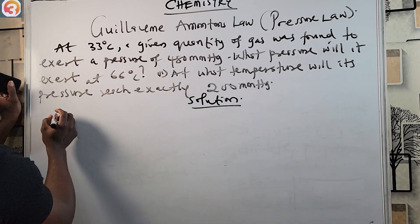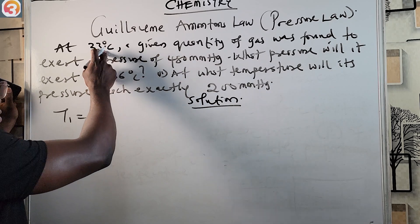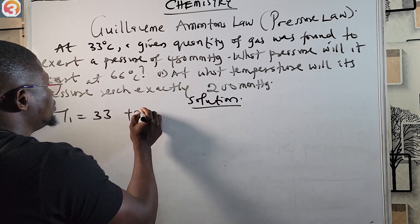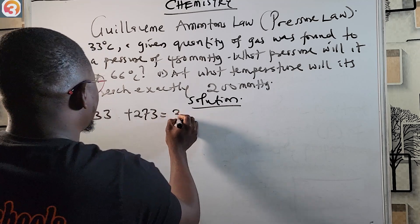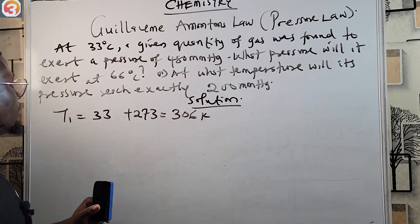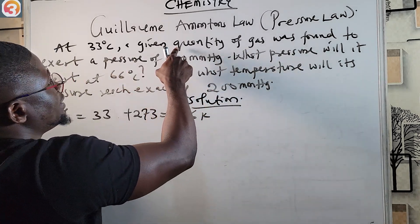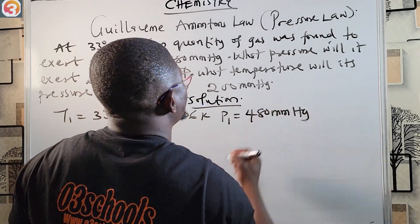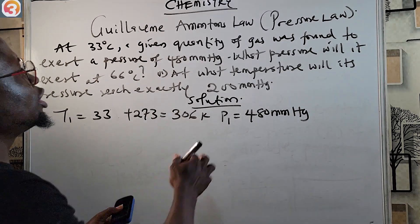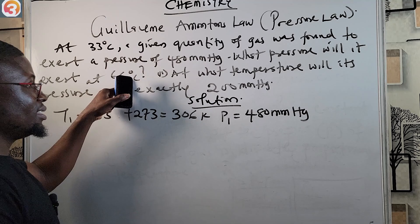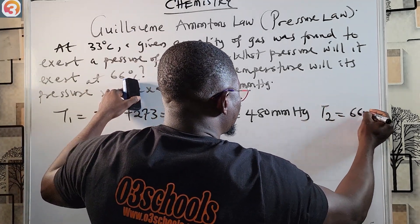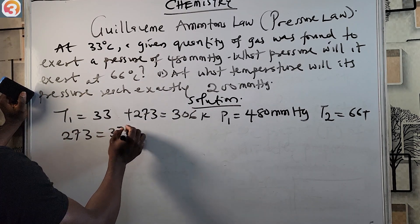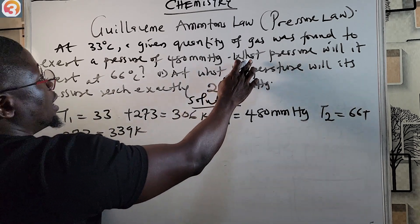For the solution, remember you cannot work in degrees Celsius — you must convert to Kelvin. So T1 = 33 + 273 = 306 Kelvin. P1 is given as 480 millimetres of mercury. T2 = 66 + 273 = 339 Kelvin. We are looking for P2.